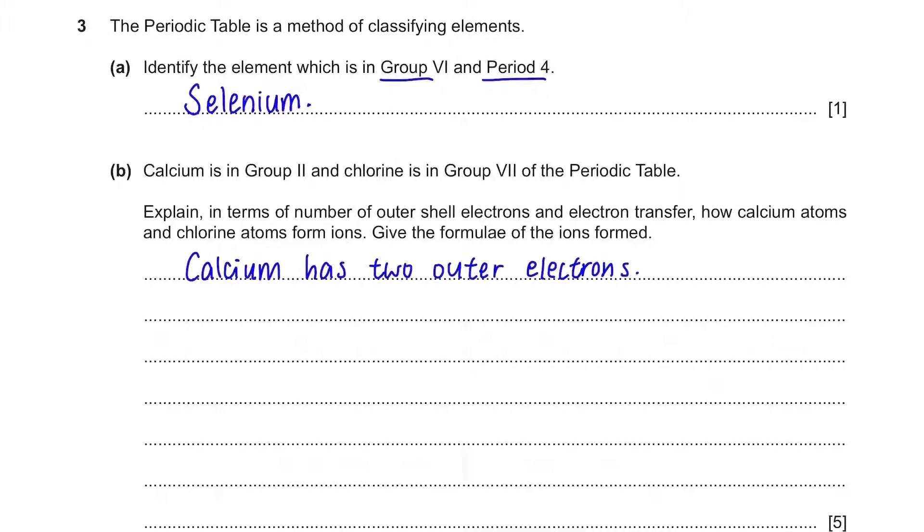And we know that from group 1 to group 4, the atoms in those groups will lose electrons. So the calcium ion is going to be Ca2+.